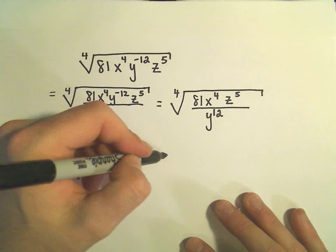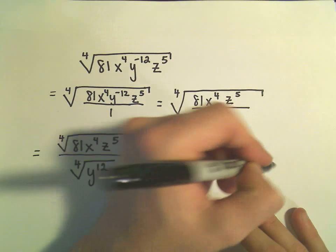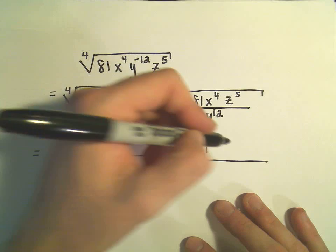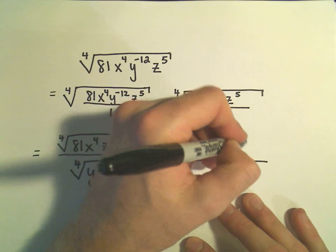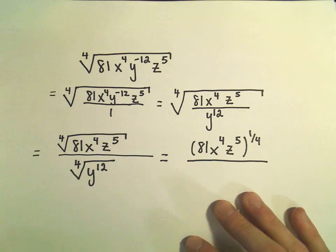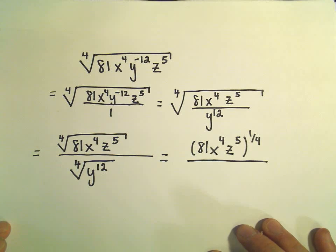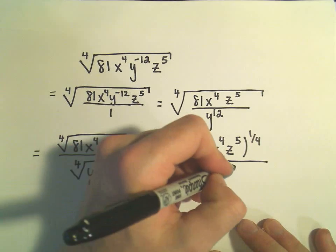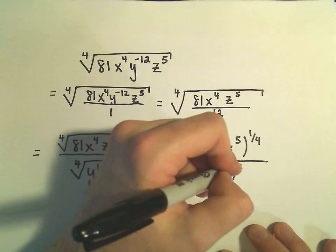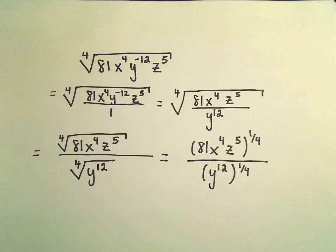And now I'm going to convert things into exponential notation. So I have 81x to the fourth z to the fifth, raised to the one-fourth power. And in the denominator, the same way, we'll have y to the twelve, and we're going to have that raised to the one-fourth power.